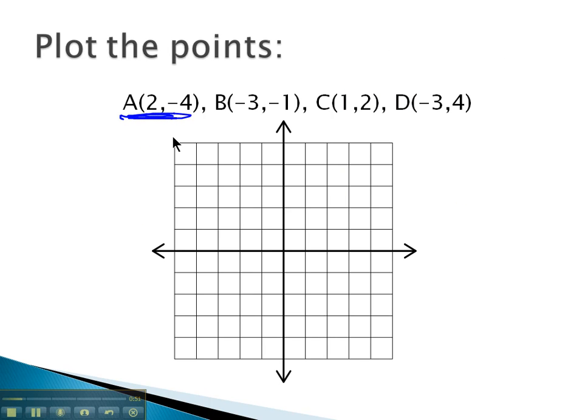A is given at 2 comma negative 4. 2 is the right, and negative 4 is the up. But because it's negative, we might think about it as going down. So we'll go 2 right, and the negative 4 moves us down 4. 2 comma negative 4 leads to point A.